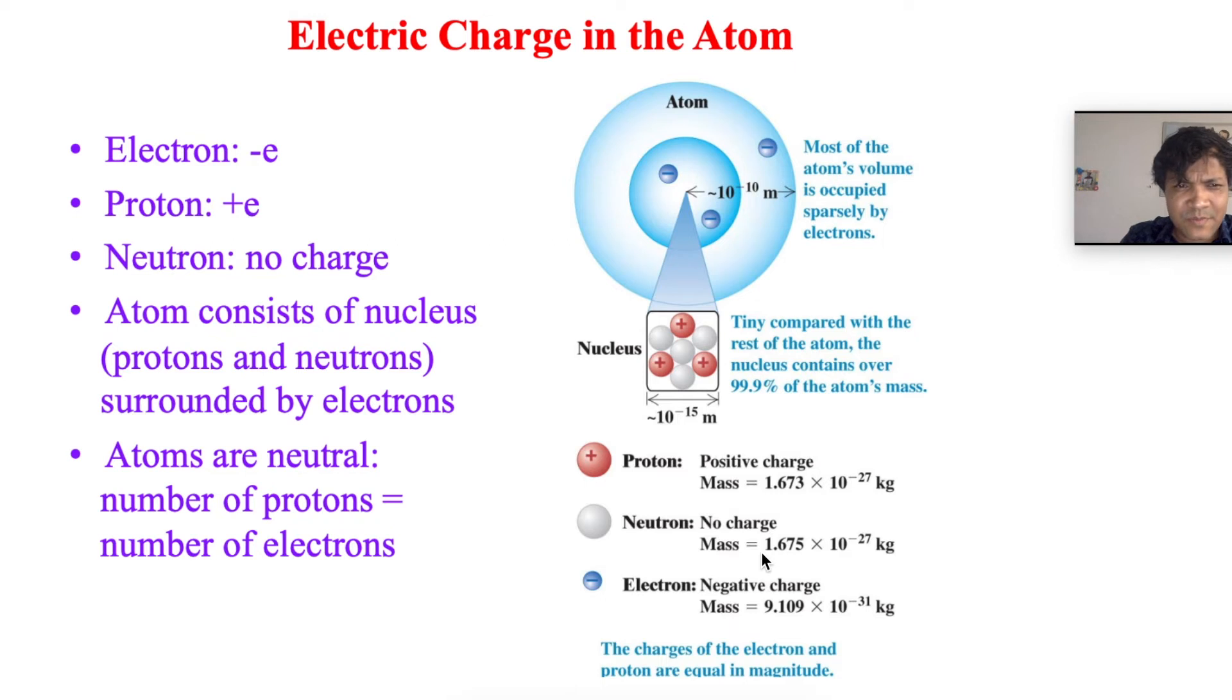Protons: plus 1.6 times 10 to the negative 19 coulombs. Neutrons: no charge, zero coulombs. Atoms consist of nucleus surrounded by electrons. Atoms are neutral - number of protons equals number of electrons. There are about 118 atoms in the periodic table. When they don't have the same number of electrons and protons, we call them either cation or anion.